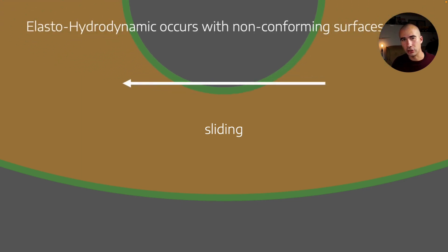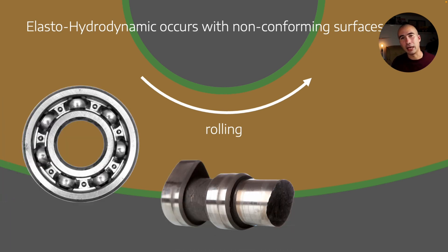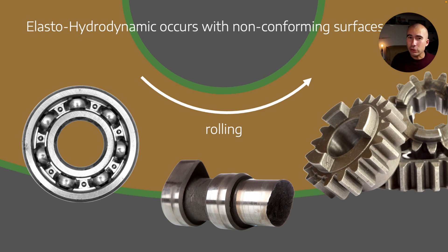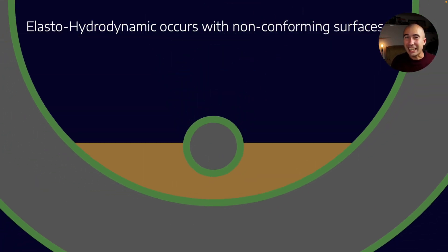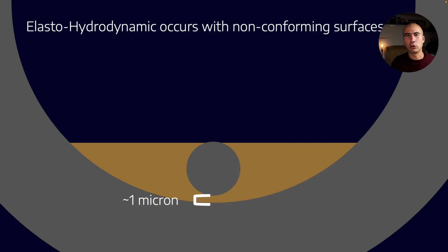Now elastohydrodynamic lubrication is something that we see where there's rolling motion between two relative surfaces. That's something that's a feature of bearings, cams, or gears. Now in those instances, the lubricant film is even smaller. It's usually in the order of about a micron.